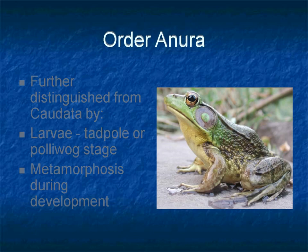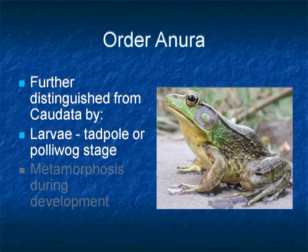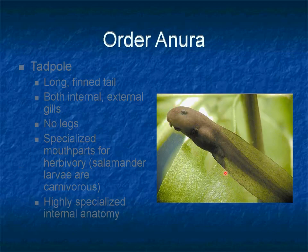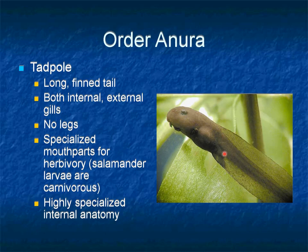Members of this order are distinguished from Order Caudata in terms of larval appearance, which is a tadpole, typically polliwog-shaped. They also exhibit different life habits in terms of metamorphosis during development. The tadpole has a long fin tail with both internal and external gills and no legs. The mouth parts are specialized for herbivorous feeding, though some tadpoles are carnivorous like salamander larvae.